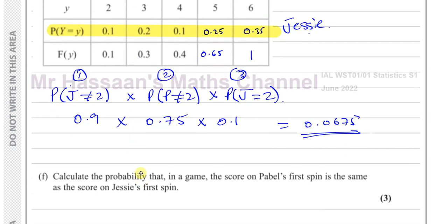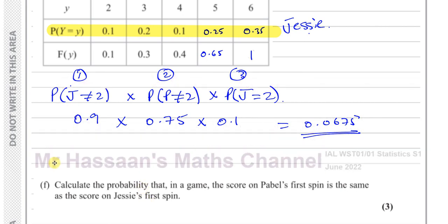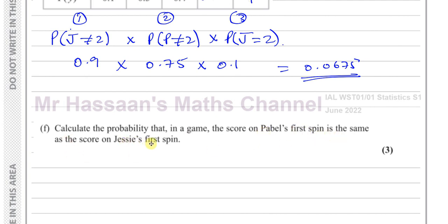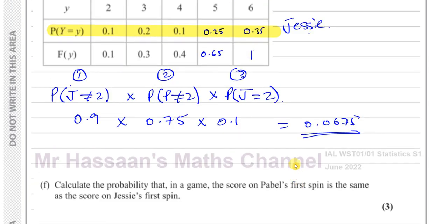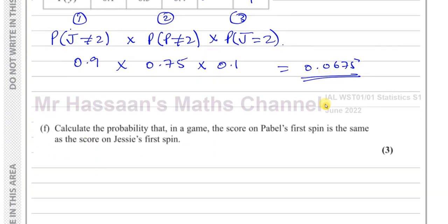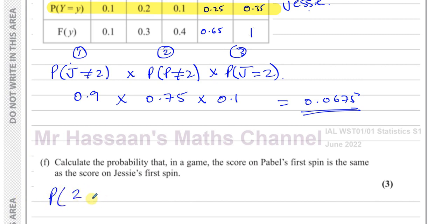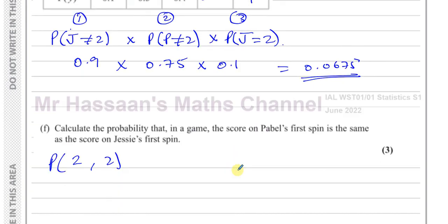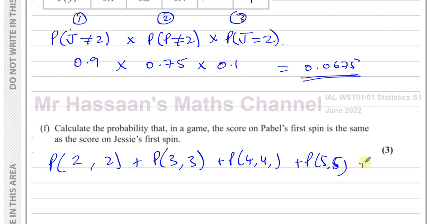Now for part F, the final part. Find the probability that the score on Pavel's first spin is the same as the score on Jesse's first spin. The first spins could match as: 2 and 2, 3 and 3, 4 and 4, 5 and 5, or 6 and 6 — those are all the possible combinations.